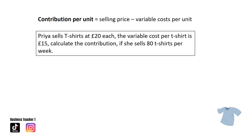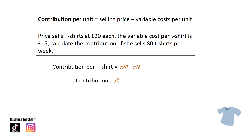Our first question: we're required to calculate the contribution. Contribution looks at the profit made on each individual product. Priya sells t-shirts at £20 each and the variable cost per t-shirt is £15. Calculate the contribution if she sells 80 t-shirts per week. The formula for contribution per unit is selling price minus variable cost per unit. So contribution per t-shirt is £20 minus £15, which gives a contribution of £5.